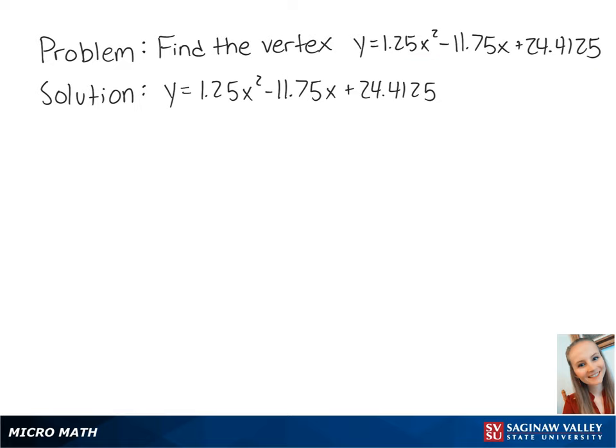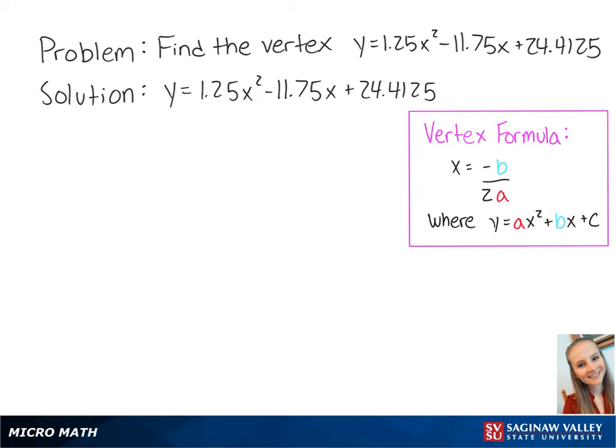To find the vertex, we can use the vertex formula. For this equation, a is equal to 1.25 and b is equal to negative 11.75. We can plug these numbers into the formula.